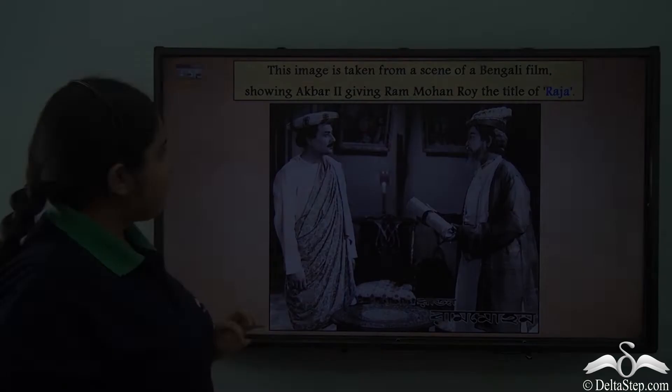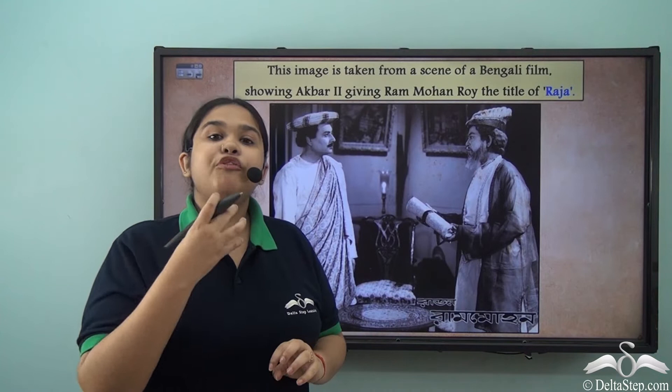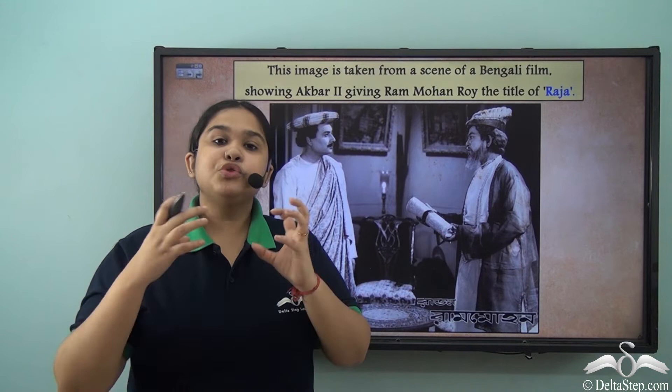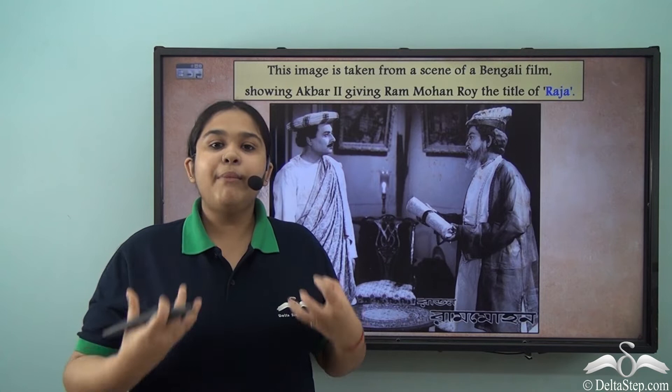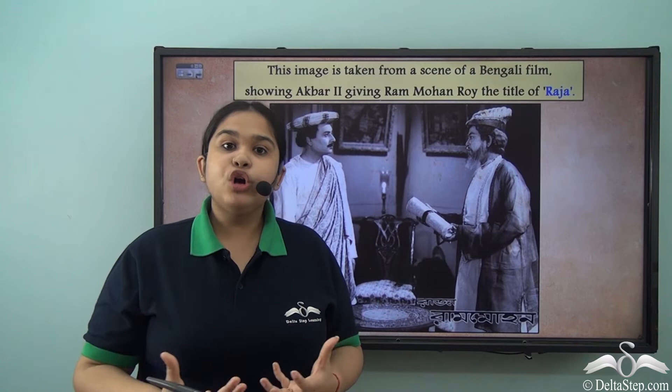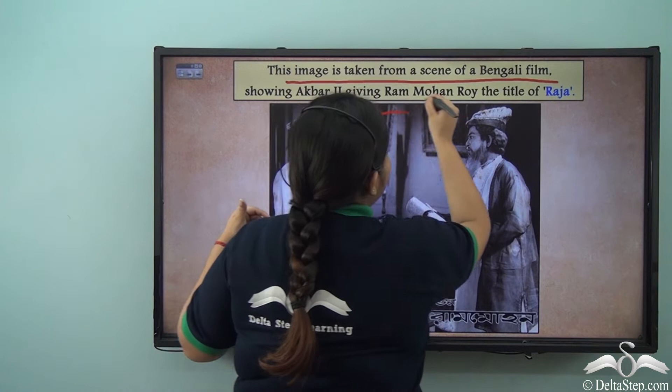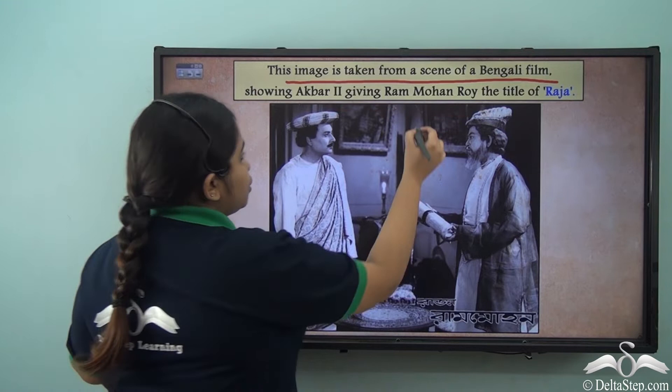The title of Raja was given to Ram Mohan Roy by the then Mughal Emperor Akbar II, who wanted Raja Ram Mohan Roy to go to the British government and convince them to come up with welfare activities and laws for the Indian people. This is an image from the Bengali film Raja Ram Mohan Roy, showing him being given the title of Raja by Akbar II.